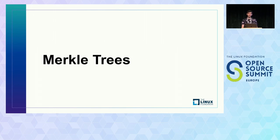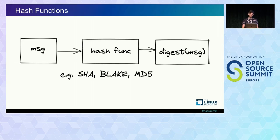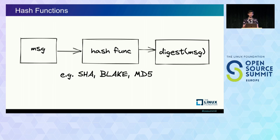Let's first talk about Merkle trees. And before we do that, I want to briefly discuss cryptographic hash functions, because their properties give us some intuition about why Merkle trees are able to provide certain guarantees. A cryptographic hash function is typically described as one way: given some message, I'll pass it through some hash function and get a digest. Because it's one way, there's no unhash function — no way to take a digest and get the message that was used to create it.